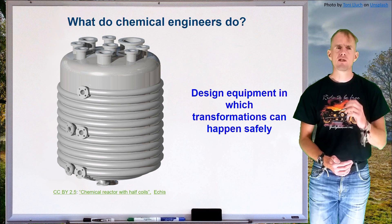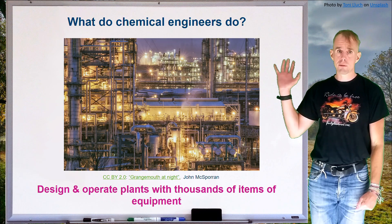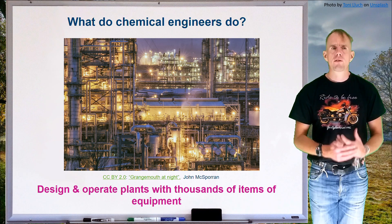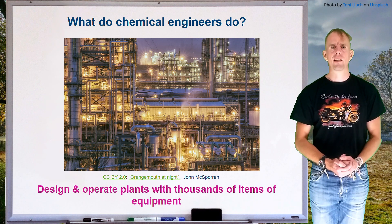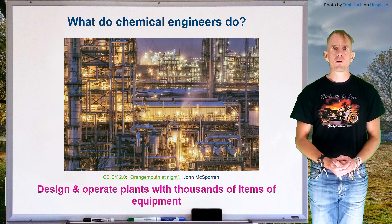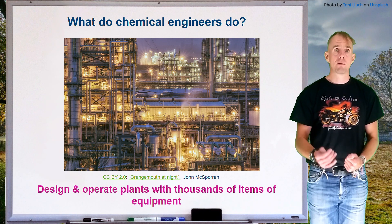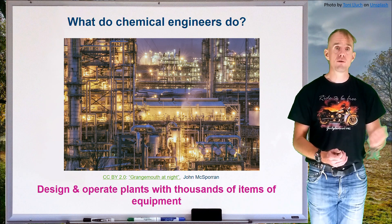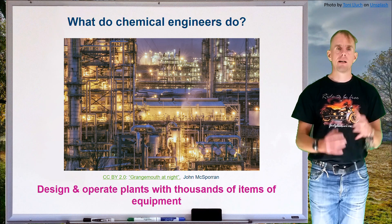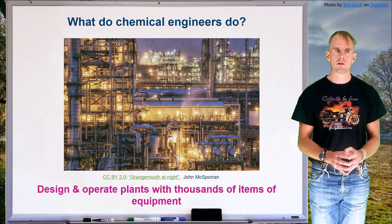Chemical engineers don't just design equipment — they design plants. Here on the board is a picture of a plant complex in Scotland. These plants consist of thousands of items of equipment all interlinked by pipework, communications cables, and sometimes conveyor systems. The entity that converts a raw material into a finished product — whether petrochemical, food, drink, or pharmaceutical — will in some way resemble this photograph. Remember, the scale is that we're producing products for tens of millions of potential customers.